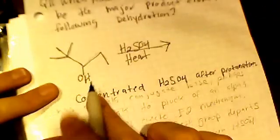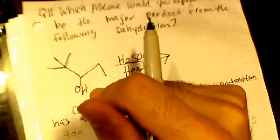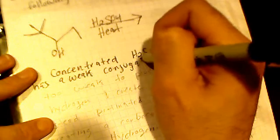So the H2SO4 is going to protonate this alcohol right here. Because this is a strong acid, after it protonates and loses its hydrogen, it becomes a weak conjugate base.